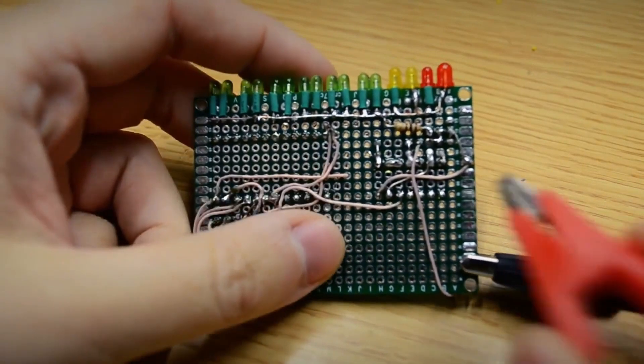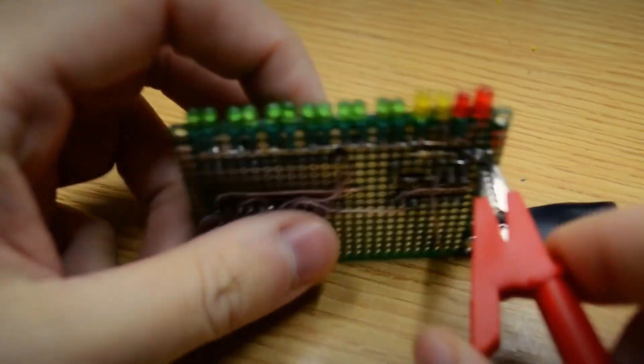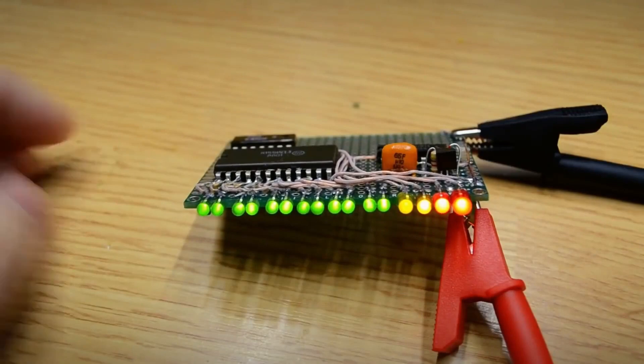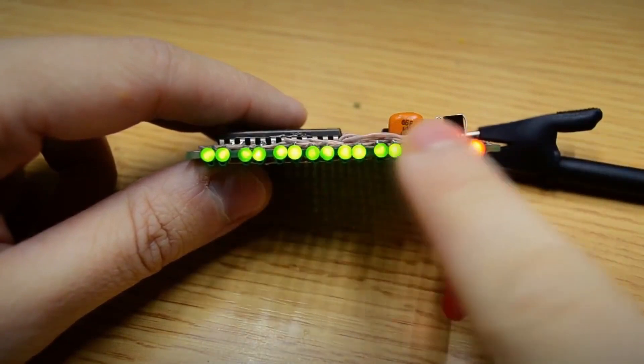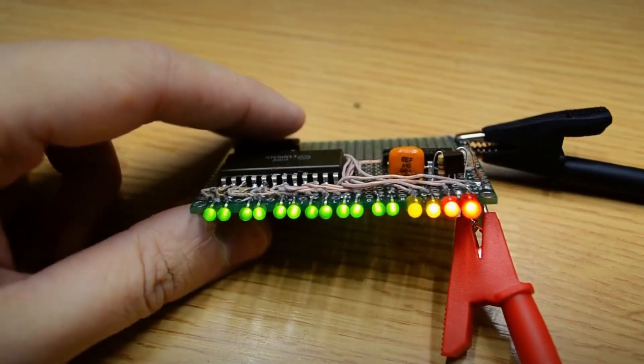If everything is fine, then we continue with the assembly. If not, then check if the reset lines of the counter and decoder are grounded, and if there is a clock signal at the counter's input, then carefully solder everything and check.